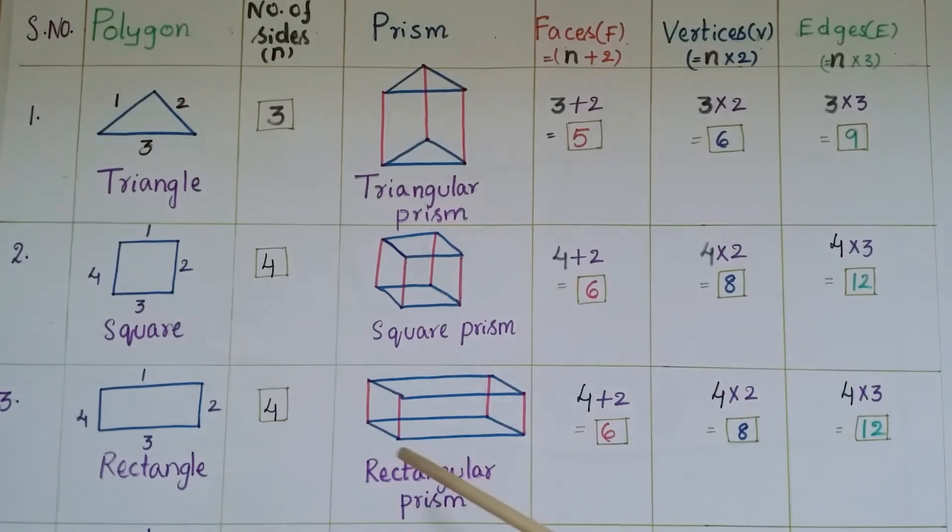So same like that for rectangular prism, the rectangle is having 4 sides, so the same number of faces are 6, and vertices are 8, and edges are 12.